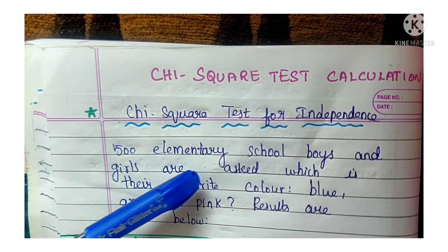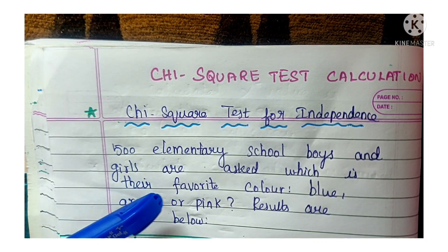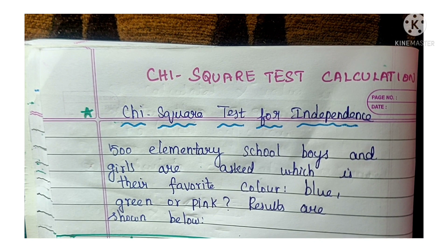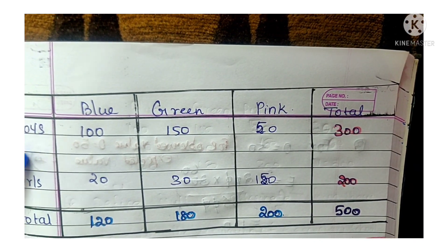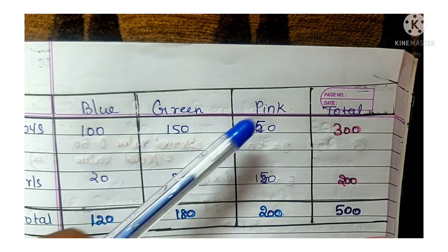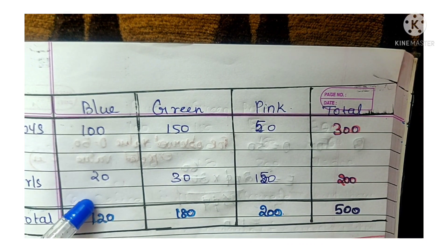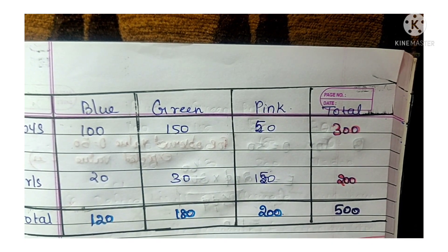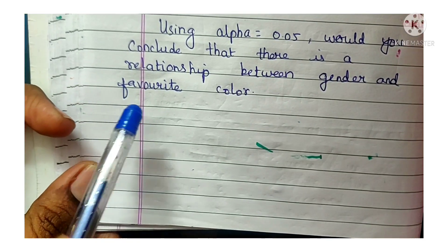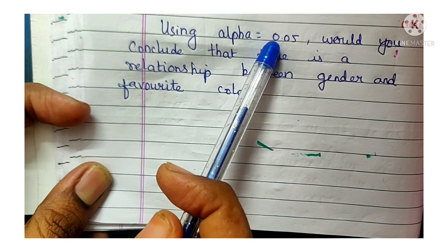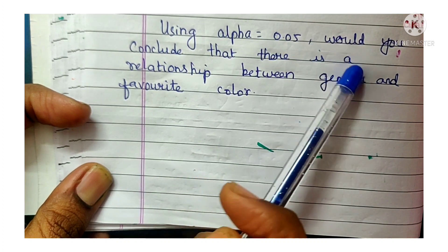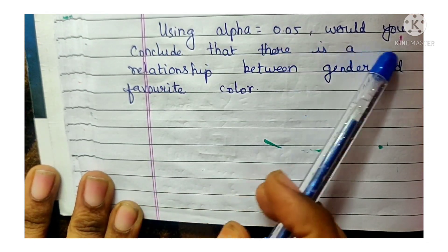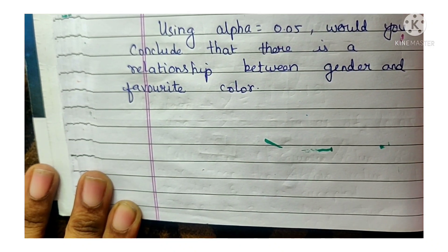The given data is: Boys — blue 100, green 150, pink 50. Girls — blue 20, green 30, pink 150. The question asks: using alpha at 5% level of significance (0.05), would you conclude that there is a relationship between gender and favorite color?